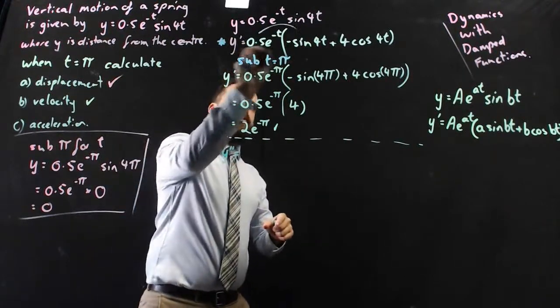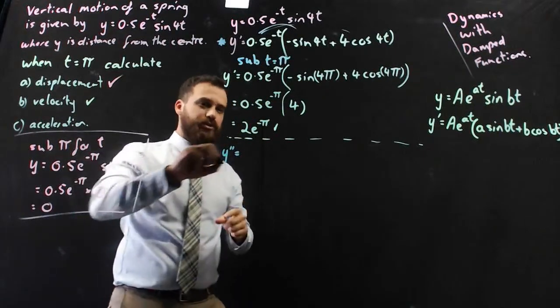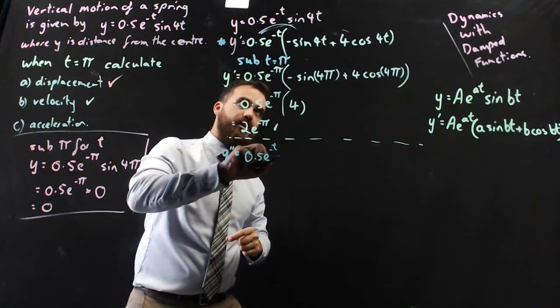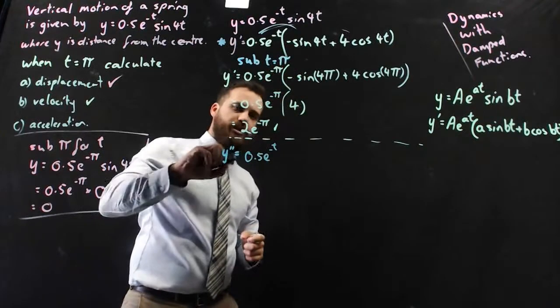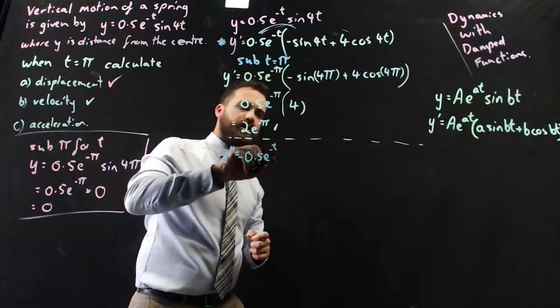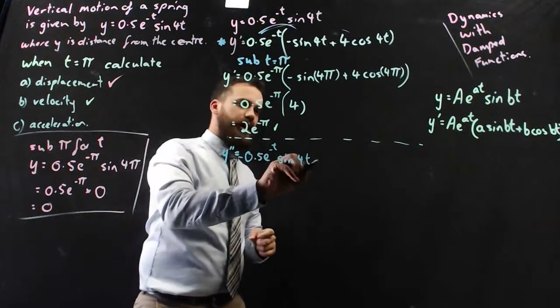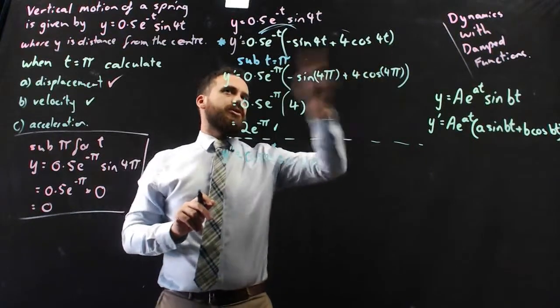So I'm going to expand those brackets because then I'm going to be able to derive it a little bit easier. 0.5e to the negative t times negative sine 4t, so there's going to be a negative out the front, negative 0.5e to the negative t sine 4t, and then I'm going to add 0.5e to the negative t times 4 cos 4t. That's going to be 2e to the negative t cosine 4t.